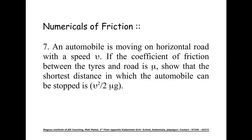Numerical number seven of the chapter friction. An automobile is moving on a horizontal road with a speed v. If the coefficient of friction between the tires and the road is mu, show that the shortest distance in which the automobile can be stopped is v square by 2 mu g.